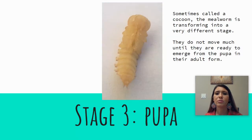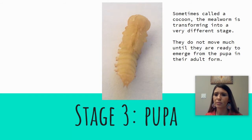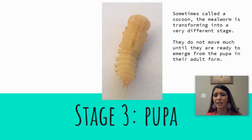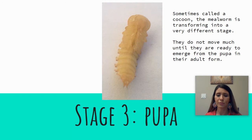Stage three is the pupa, sometimes called a cocoon, and the mealworm is transforming into a very different stage. They don't move much until they're ready to emerge from the pupa in their adult form.